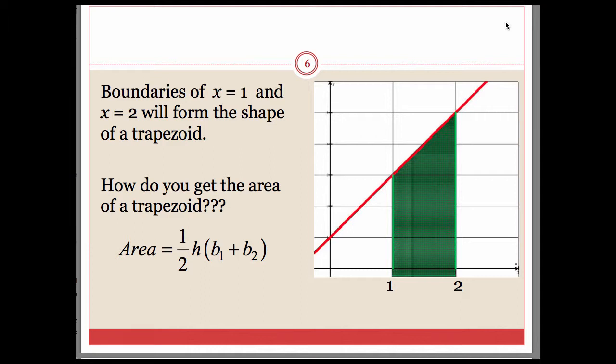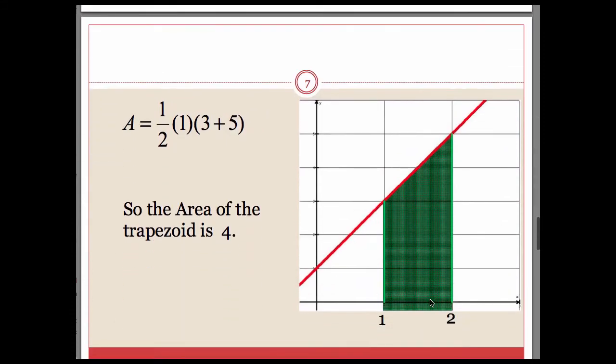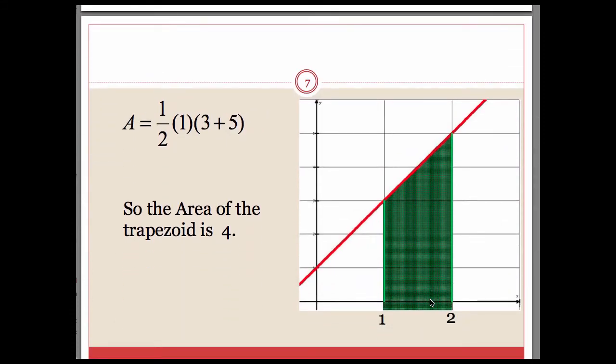Hopefully you remember that area of a trapezoid you can get by one half the height times the sum of the bases. If we apply that to this, you have to look at it sideways. We can think of this length on the left as b1, this one over here as b2, and this in here is your height. To get the area of that trapezoid, we would have one half, the height is one because it's going from one to two, and that one base is three high, the other one is five high. So the area would be four.